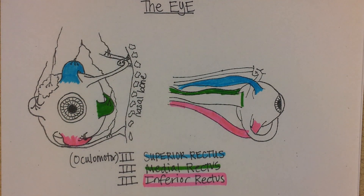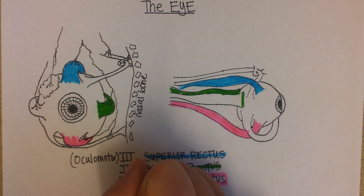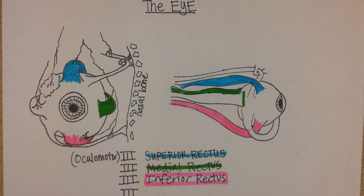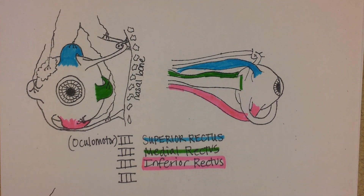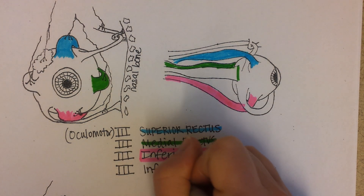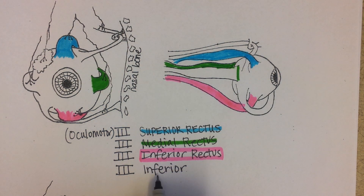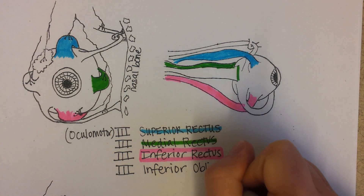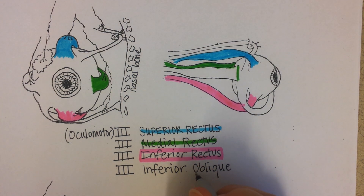Then there is one more muscle controlled by the oculomotor nerve, and that is called the inferior oblique. In the name, inferior means it's located on the underside of the eye, and oblique means that the muscle moves at an angle.